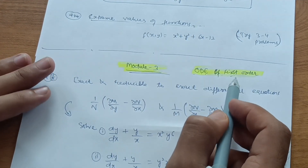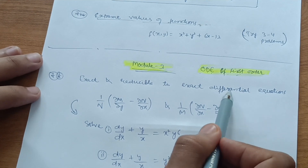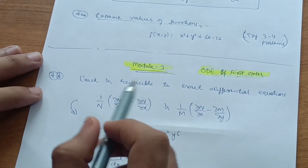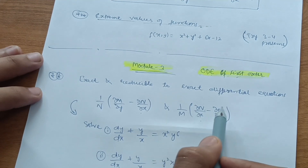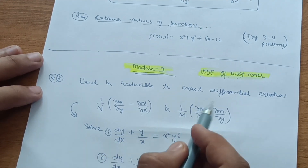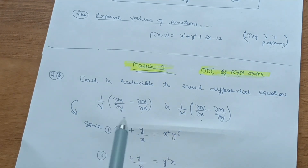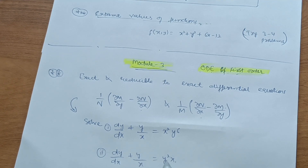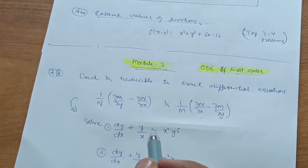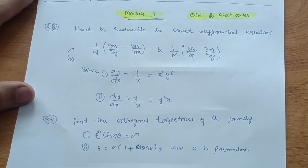Module 3 is Ordinary Differential Equations of the first order — very simple. Focus on exact and reducible-to-exact differential equations. You differentiate M with respect to y and N with respect to x; if equal, the equation is exact and you can solve it. Problems are like: solve dy/dx + y/x = x²y⁶, and dy/dx + y/x = y²x. Go through three or four problems on this concept — it is straightforward.